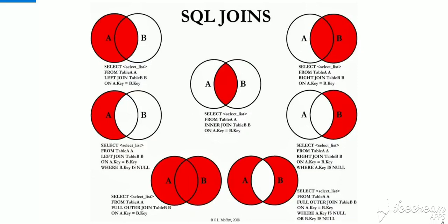Hi, welcome back to my channel. In this video we will learn what are SQL joins. Everyone knows SQL joins are used to combine data or rows between two or more tables. We will go through all different types of SQL joins, take some examples and see what the output of different types of joins will be. There are four main SQL joins: left join, inner join, right join, and full outer join.